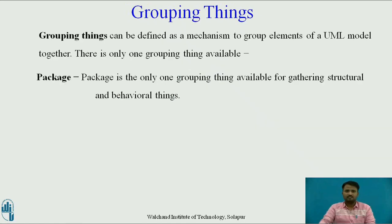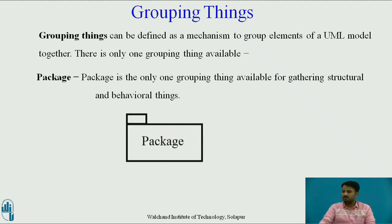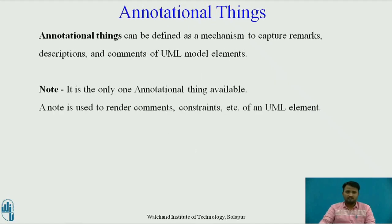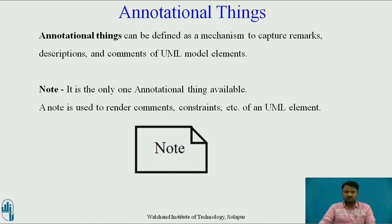Grouping things can be defined as a mechanism to group elements of a UML model together. There is only one grouping thing available — that is Package. Package is the only grouping thing available for gathering structural and behavioral things, represented by a rectangle above a rectangle. Annotational things can be defined as a mechanism to capture remarks, descriptions, and comments of UML model elements. Note is the only annotation thing available, used to render comments, constraints, etc. of UML elements.